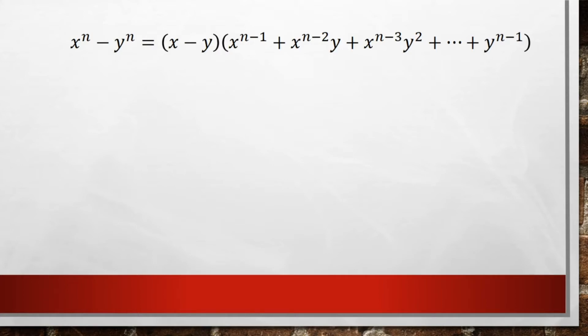The first thing we always do is have a factor of x minus y. In the second parentheses, we're going to have exponents of x and y. We're going to start with x — the exponent of x starts at n minus 1 and goes down every term: n minus 1, n minus 2, all the way down to 0. While the exponent of y starts at 0, goes up to 1, 2, and then n minus 1.